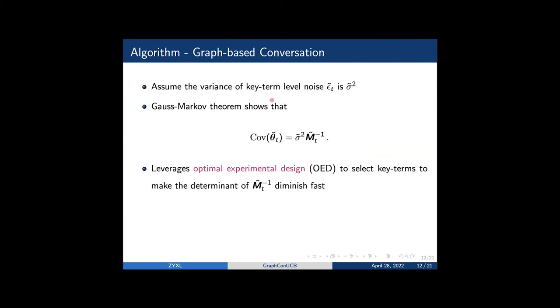We now introduce how we utilize the graph structure to select the most informative key terms. We assume the variance on the key term level is the square of tilded sigma. The Gauss-Markov theorem tells us that the covariance matrix of tilded c t is the square of tilded sigma times the inverse of tilded M T.